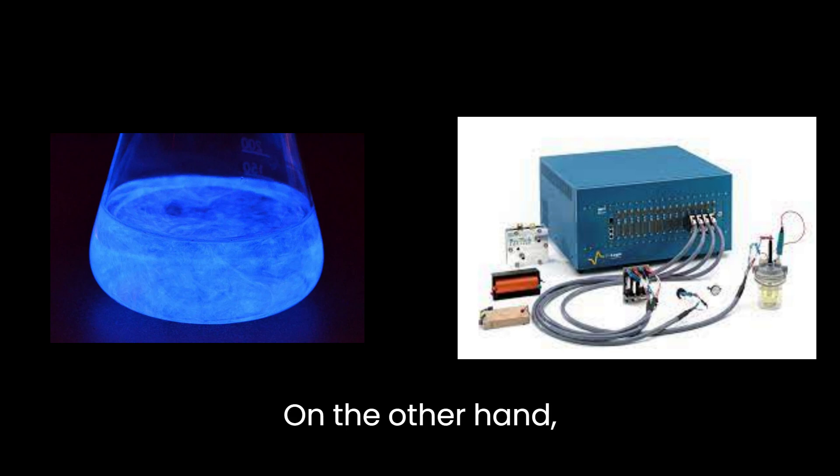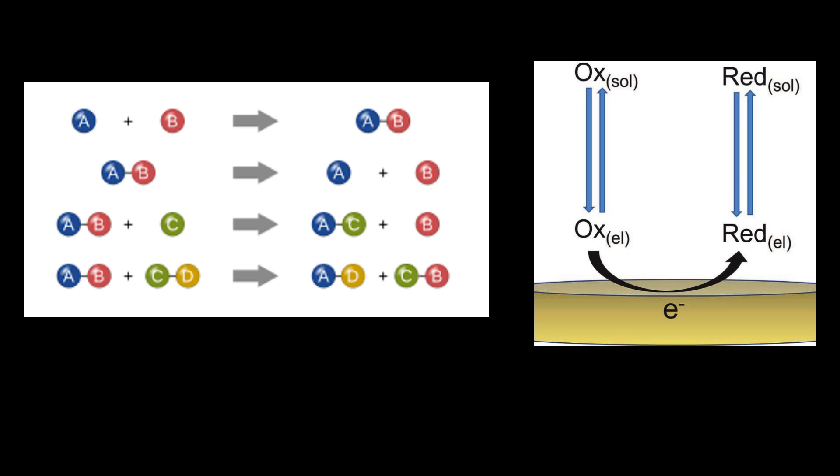On the other hand, electrochemiluminescence requires an electric current to be applied to the system. Another difference between the two is the type of reaction that is involved. Chemiluminescence involves a chemical reaction, whereas electrochemiluminescence involves an electrochemical reaction.